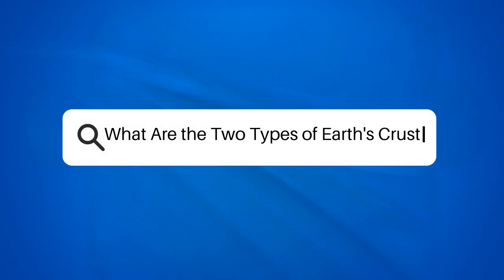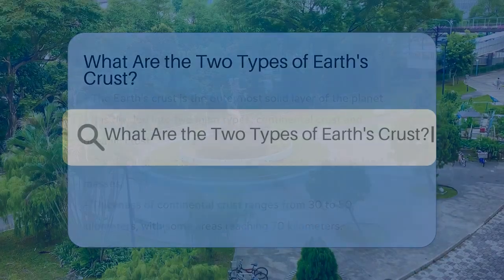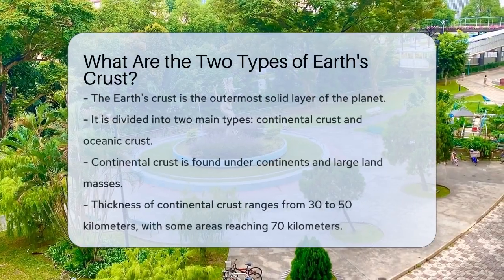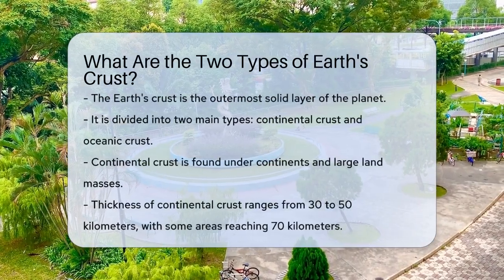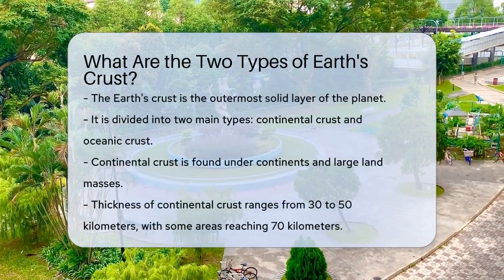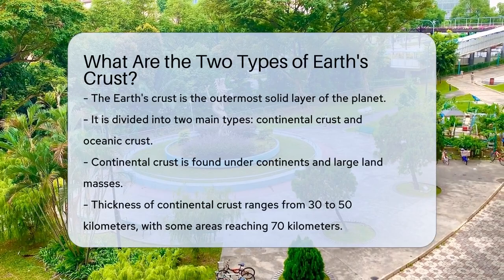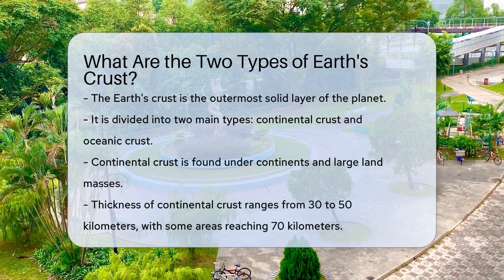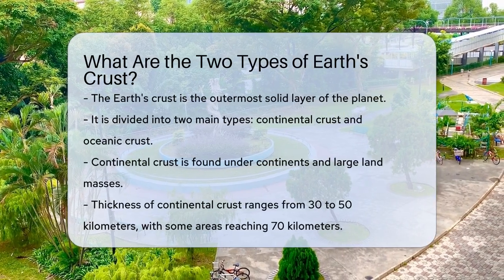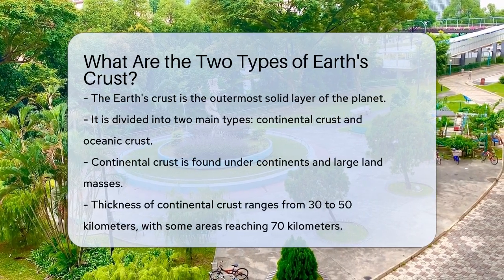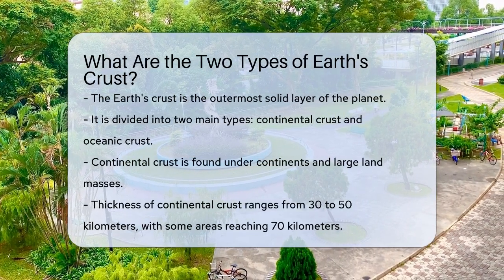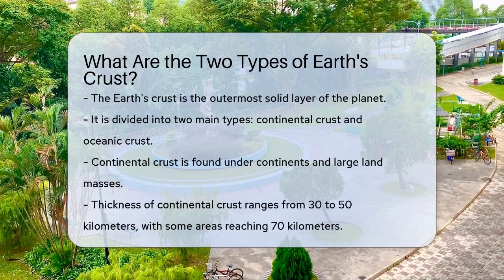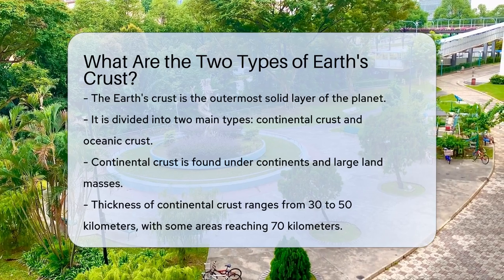What are the two types of Earth's crust? Let's dive into the fascinating world of geology to find out. The Earth's crust, the outermost solid layer of our planet, is not uniform. It is divided into two distinct types based on several key characteristics.